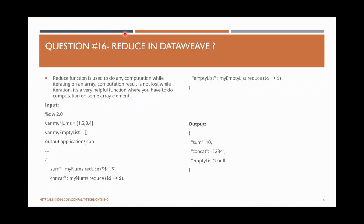The reduce function in DataWeave is used to do computation while iterating over an array. For example, you want to sum elements or concatenate them. In this example, myNums is an array (starting with square bracket) with four elements: 1, 2, 3, 4. The output is JSON. The syntax is: payload.sum = myNums reduce (payload, indices) -> payload + indices — this is a lambda expression adding the elements.